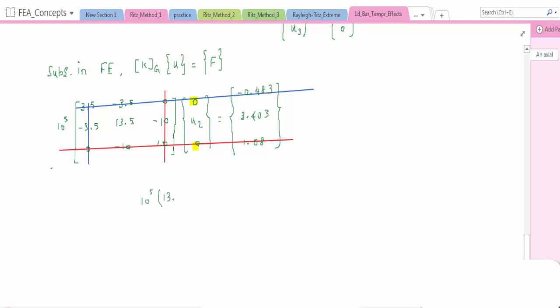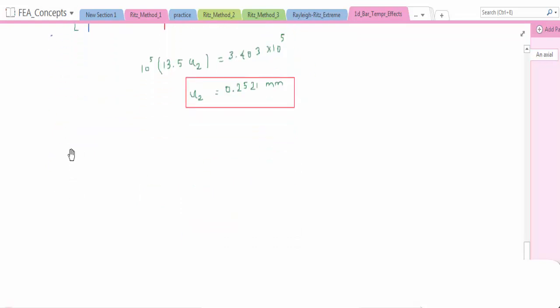The remaining thing is 10^5, 13.5 U2 is equal to 3.403 x 10^5. So U2 equal to 0.2521 millimeter. This is the displacement at node 2.